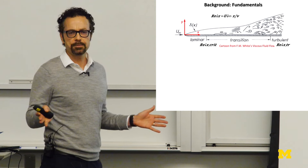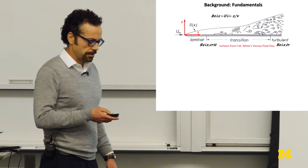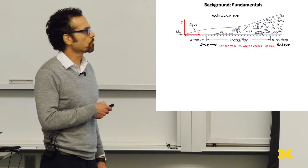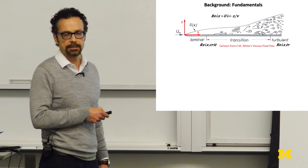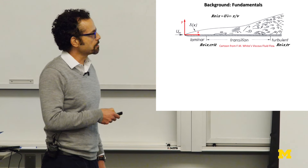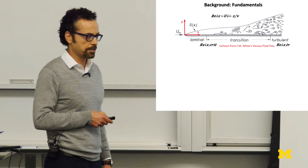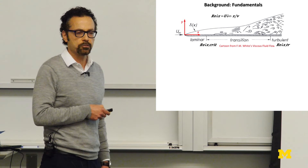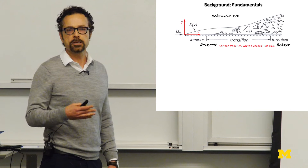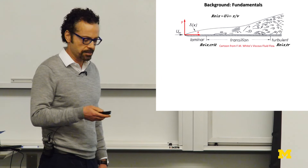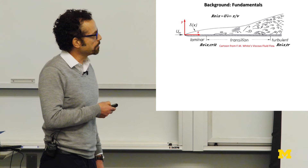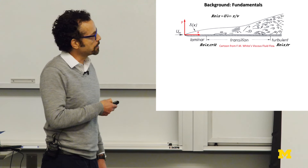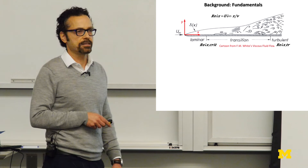This boundary layer initially is nice, laminar, smooth, and steady. However, when you look at the boundary layer Reynolds number — whether defined based on this thickness or based on the x location along the plate — the Reynolds number continuously increases in the streamwise direction. At one point, given enough plate length, it will reach a critical Reynolds number above which the boundary layer becomes unstable to small disturbances, and you start developing unsteadiness that amplifies and transitions the flow from this nice laminar state to a turbulent, chaotic, and three-dimensional state.